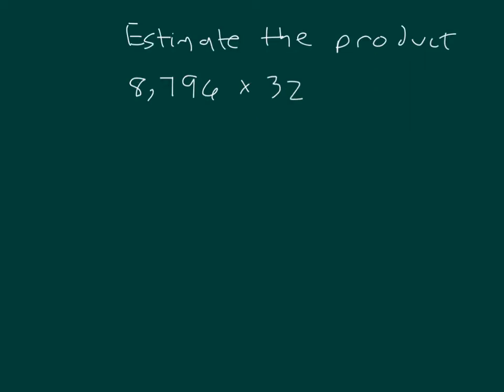Here we're asked to estimate the product of 8,796 and 32. Let's take that first factor and then round it to what? You might have said 9,000. You also might have said 8,800. We'll try 9,000.